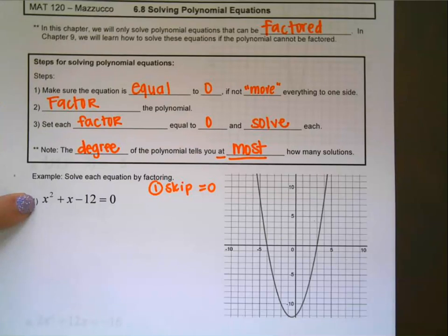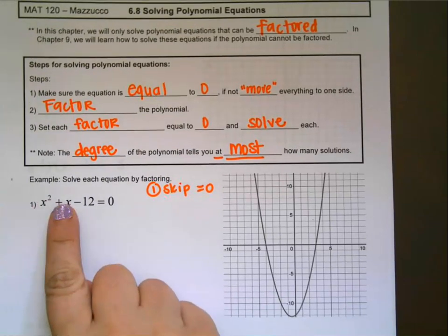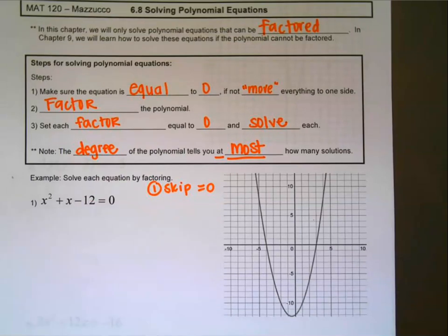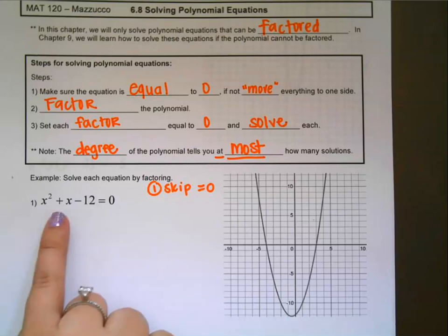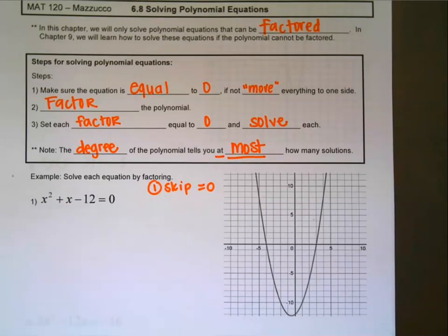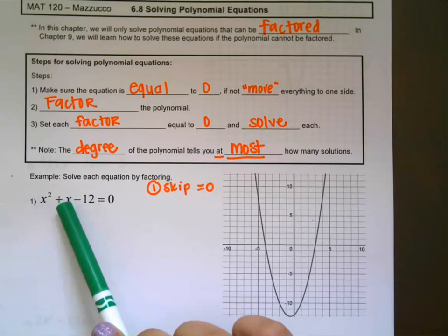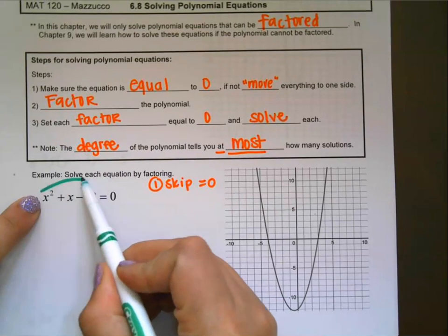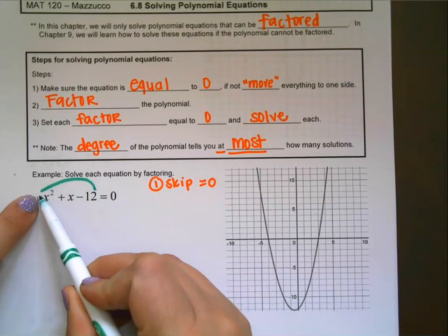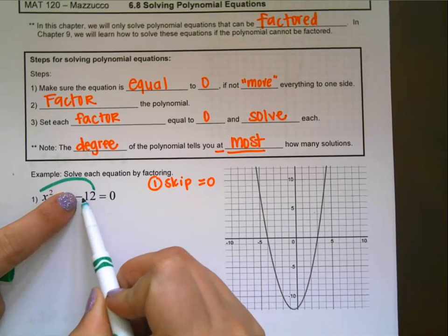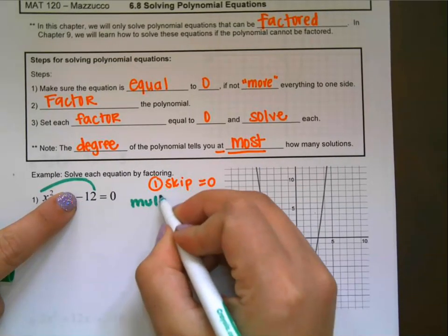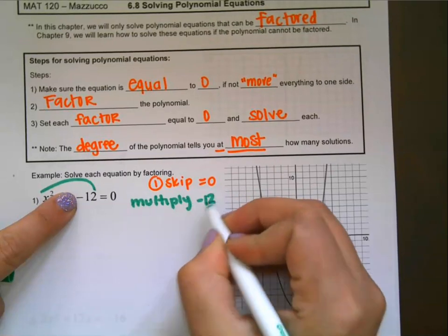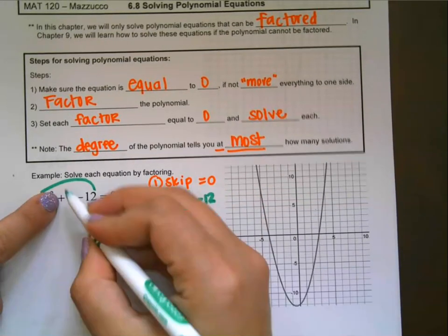If we take a look at example one, there are three terms. So we're going to use the steps from Section 6.6 to factor the left side of this equation. The very first step when factoring is to see if there's a GCF — something that goes into all the terms. In this problem there is no GCF. So we make the rainbow: A times C, which is 1 times negative 12. We need what multiplies to negative 12 and adds to 1.